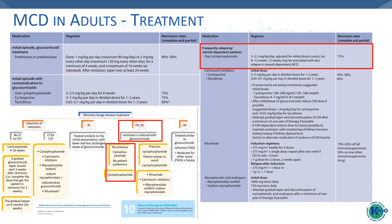For frequent relapsers or steroid-dependent patients, induce remission with glucocorticoids and use an additional drug to prevent relapse. If there is no previous cyclophosphamide exposure and no patient preference otherwise, the preferred drug is oral cyclophosphamide at 2 to 2.5 mg per kg per day, but for a longer duration of 8 to 12 weeks. Twelve weeks may be associated with less relapse in steroid-dependent patients. If used for initial induction only, 8 weeks is sufficient; but for frequent relapsing and steroid-dependent patients, 12 weeks is preferred.